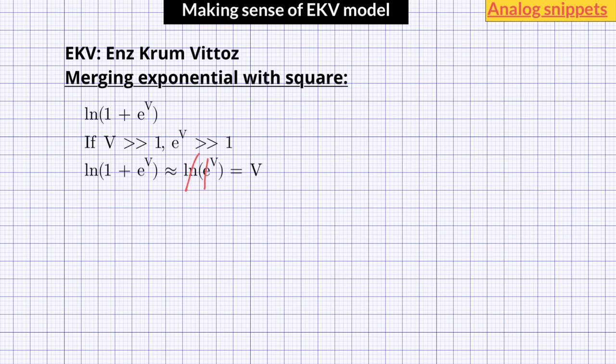Now consider the case when V is much less than 1. In that condition, e raised to power V will also be much less than 1, and this whole thing reduces to just e to power V. This approximation helps the EKV equation reduce into an exponential equation.